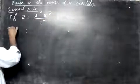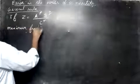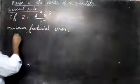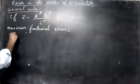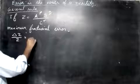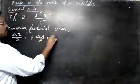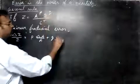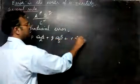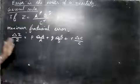So maximum fractional error will come as delta z by z is equal to p into delta a by a, plus q into delta b by b, plus r into delta c by c. This is how to write it. This is one thing you must know.